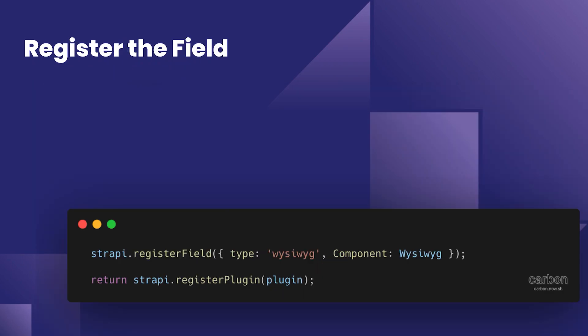The other interesting part of this tutorial will be `registerField`. By calling `strapi.registerField`, we are effectively replacing the normal editor with our new custom CK editor. So let's get started.